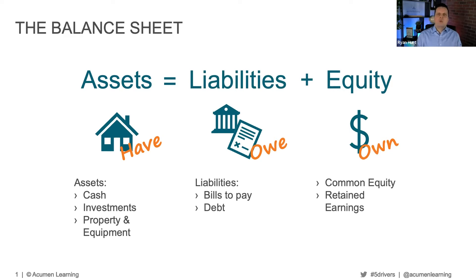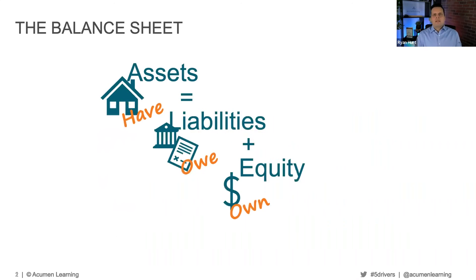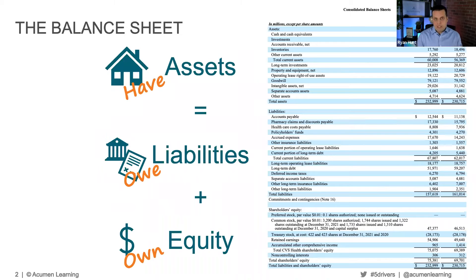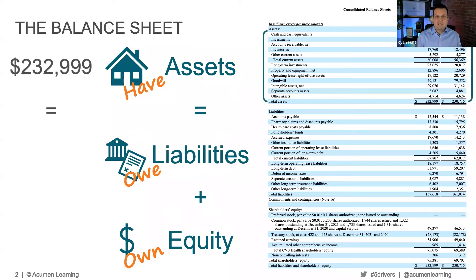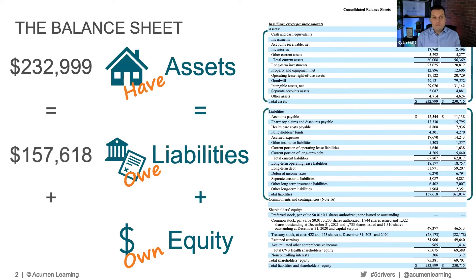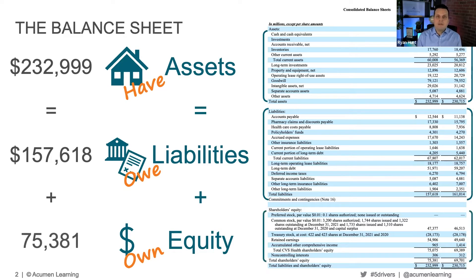Let me show you how that works with an example company. This is CVS Health's balance sheet. We've got to look for those three sections. Right up here at the top, we see their assets — they had almost $233 billion in assets. They didn't pay all cash for those assets, so they do owe quite a bit of money. In fact, they have $158 billion of liabilities, which leaves roughly $75 billion in equity that they actually own.